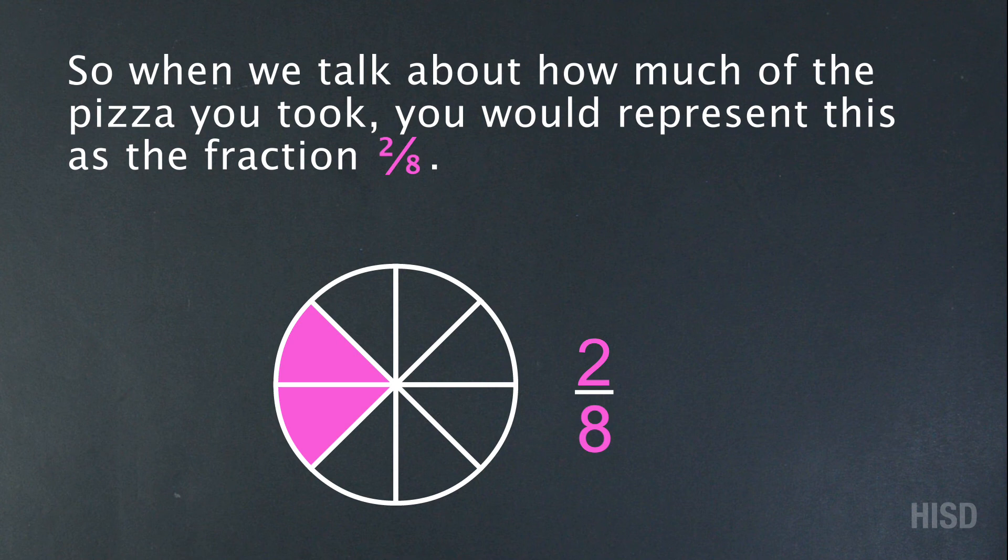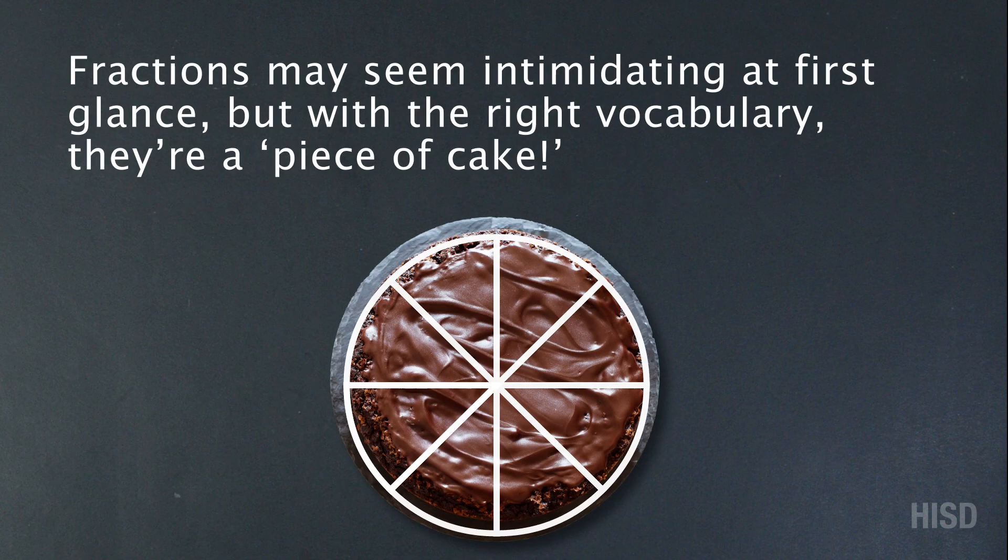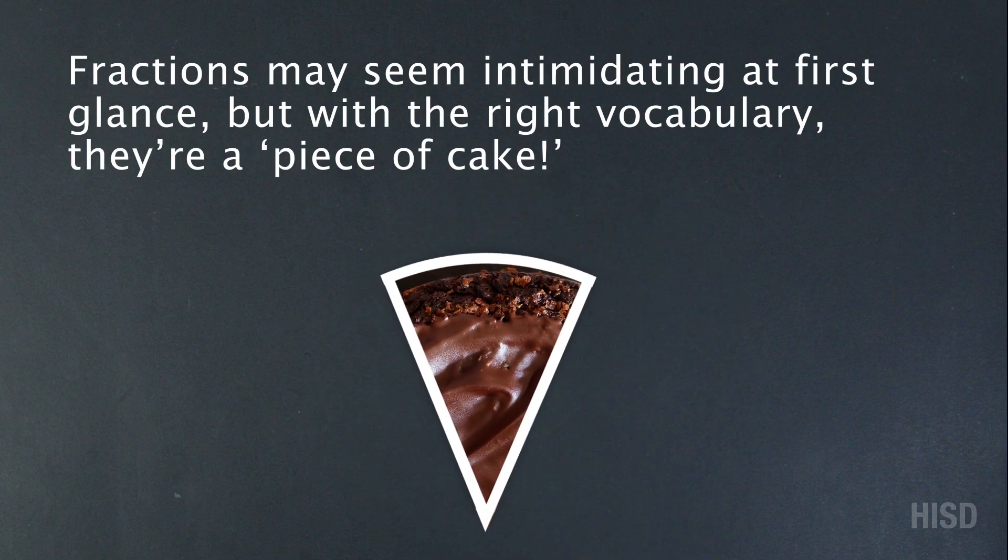As you can see in the example, two of the eight slices are colored in. This is two-eighths since we are describing the number of slices you took. Fractions may seem intimidating at first glance, but with the right vocabulary, they're a piece of cake.